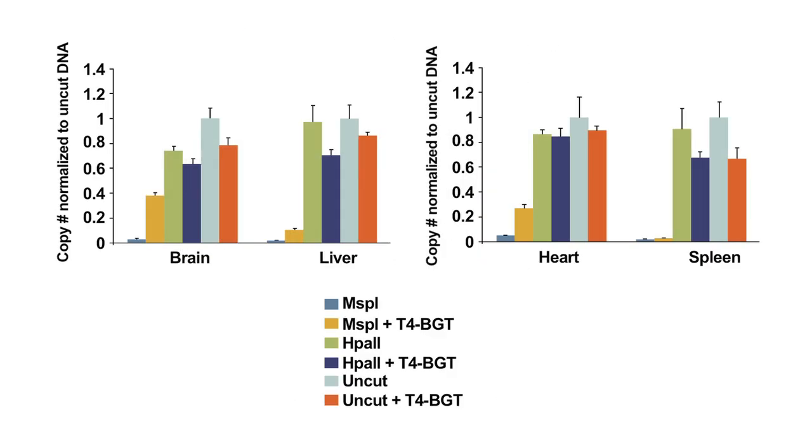For comparative purposes, real-time PCR data was normalized to uncut DNA, and a standard curve was used to determine copy number. The samples were normalized by dividing the copy number of samples by the copy number of the undigested control. Here, the variation in 5-hydroxymethylcytosine can be seen by comparing the yellow bars.